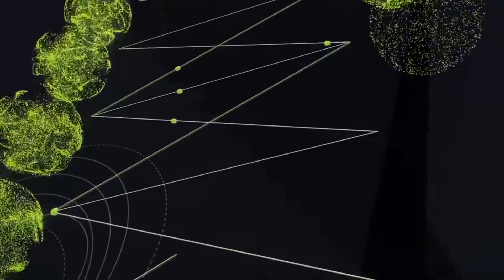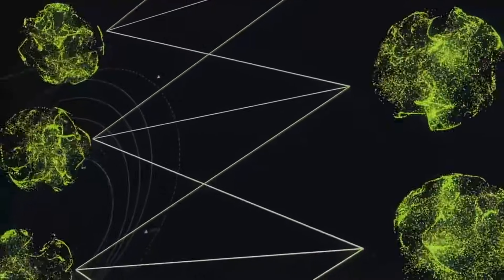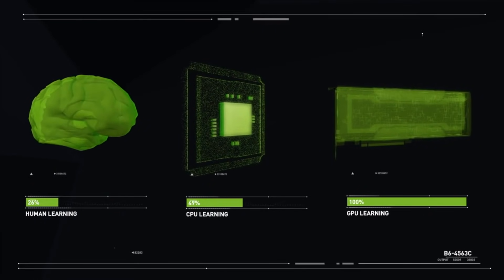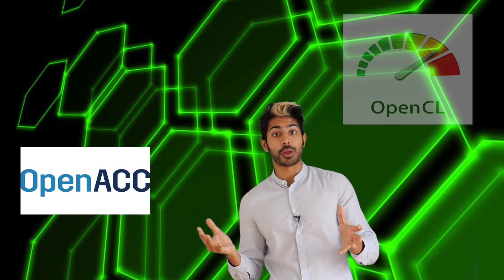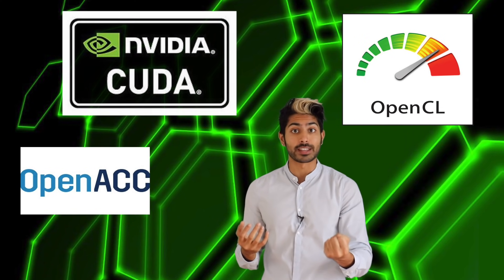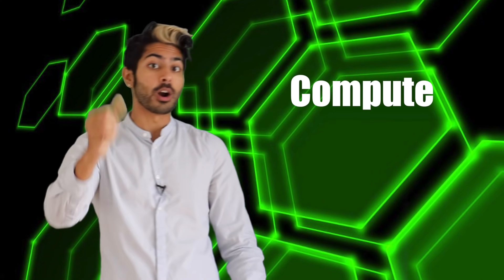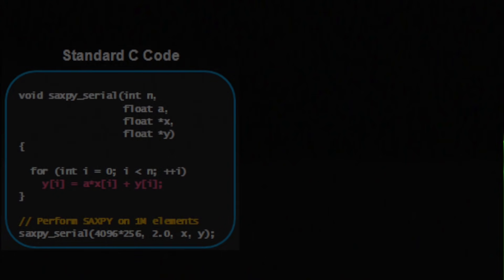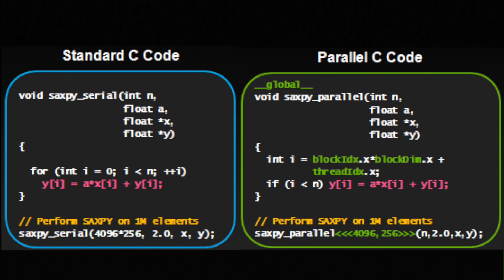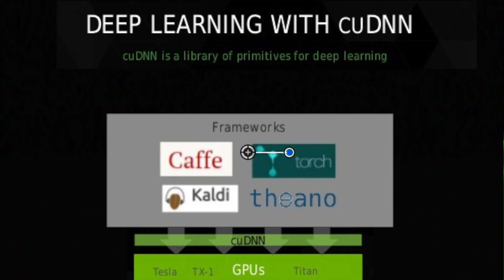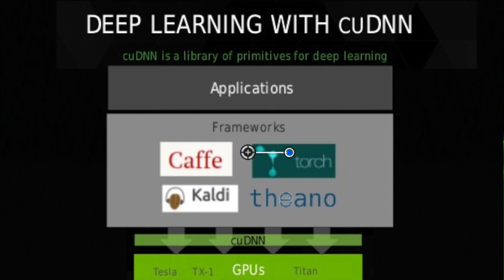Matrix operations for deep learning can easily be parallelized. Deep neural networks can have millions of parameters to train, all of which can be done much faster by utilizing GPUs. There are several programming frameworks out there that let programmers harness GPU cores, like OpenCL and OpenACC, but the most popular is NVIDIA's CUDA, which stands for Compute Unified Device Architecture. CUDA is a toolkit that acts as an extension of C with its own programming model that lets programmers run their code on NVIDIA's GPUs. The cuDNN library, built on top of CUDA specifically for deep learning, is used by every single major framework from TensorFlow to PyTorch under the hood.